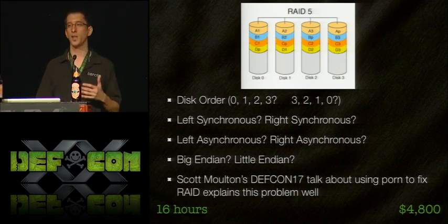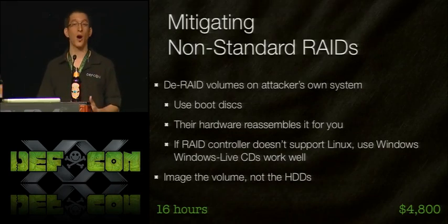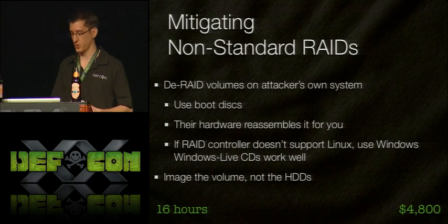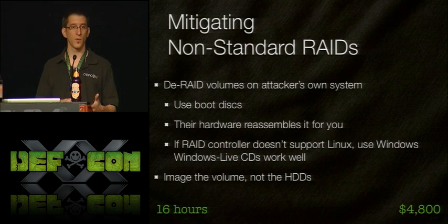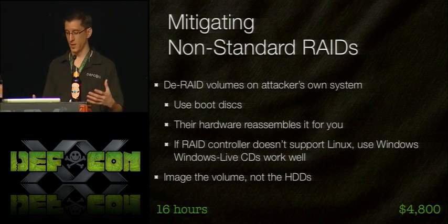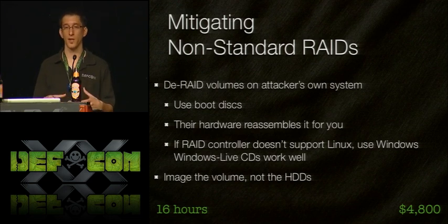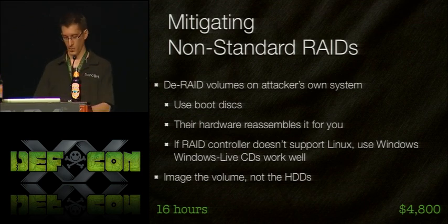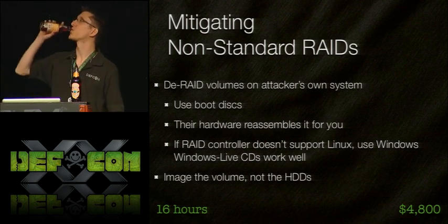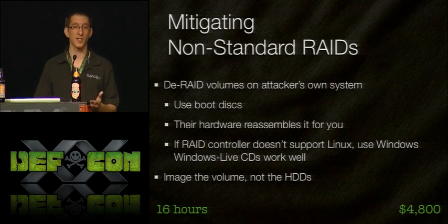To mitigate the non-standard RAID problem, the challenge is recombining it — which way was it striped and what type? An easy mitigation is to simply de-RAID the volume on their own hardware. Boot their server from a disk you control, use their RAID controller which has all the parameters to read the array correctly, and copy everything to an external USB hard drive or a 2 or 4 terabyte SATA drive slotted directly into the server. You don't need to worry about recombining the RAID because their hardware does it for you. The running total is about 16 hours, approximately $4,800 added to the investigation.